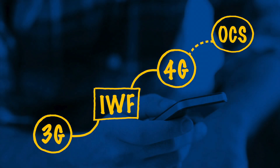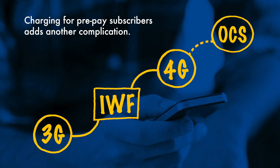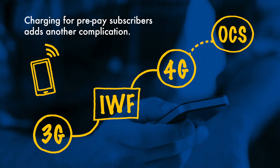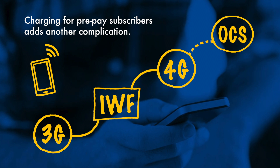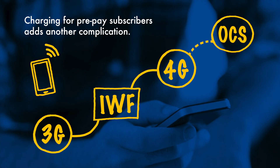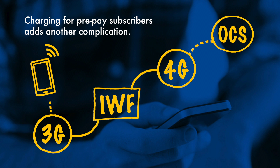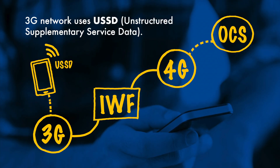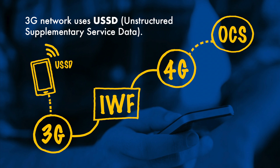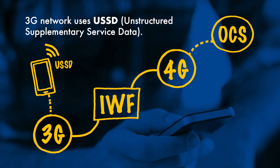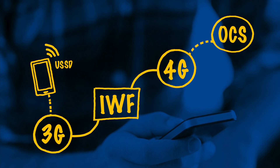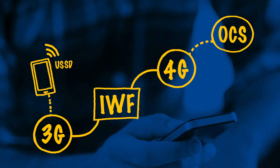Charging for pre-pay subscribers is by its very nature more complicated, as there are constant checks being made to ensure that the subscriber has enough credit. The pre-pay subscribers in the 3G network were doing these credit checks or updates over the USSD, a protocol commonly used in 3G networks for billing, location-based services, mobile money and menu-based information services.